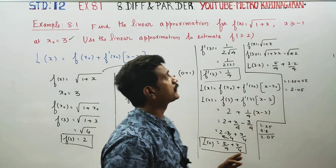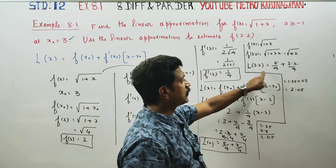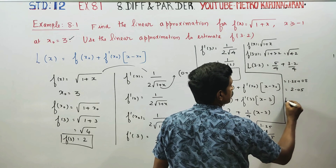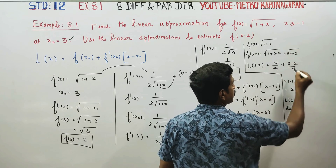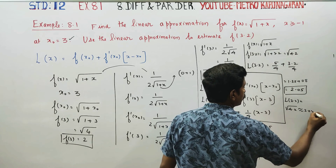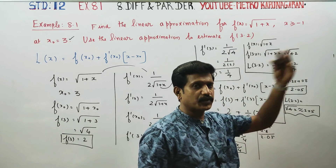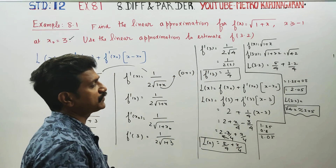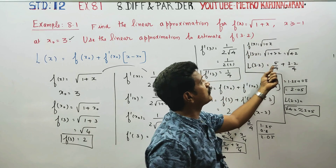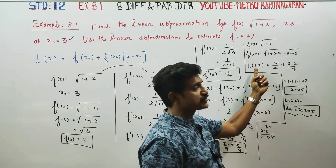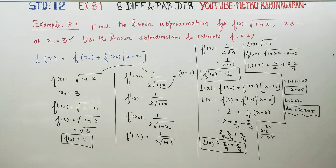This is the linear approximation. f(3.2) is approximately equal to 2.05. This is the linear approximation of square root of 4.2, since f(x) = root(1+x) and substituting x = 3.2 gives root of 4.2. So the approximate value of root 4.2 is 2.05. Thank you.